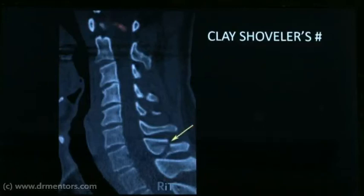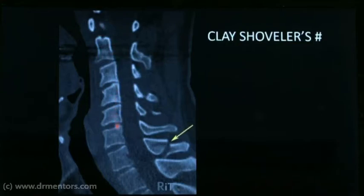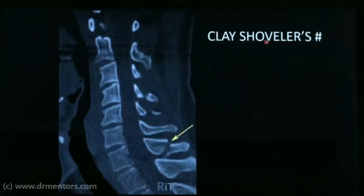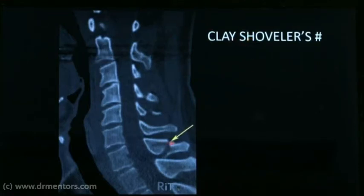Again we see a CT scan because the bones are white — a CT of the cervical spine showing C2 through C7. The arrow points to a fracture of the spinous process of C7, the lower cervical vertebra. A spinous process fracture of the cervical spine is clay shoveler's fracture. Remember: 'S' stands for spinous process. So cervical vertebra spinous process fracture is clay shoveler's fracture.